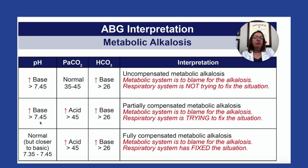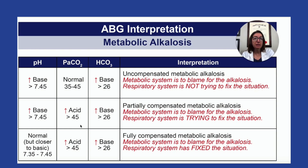On this next row, again, if pH is over 7.45, that means we have alkalosis. If we look at the PaCO2 and it's over 45, then that is acidic, so we know the respiratory system is not causing the alkalosis — it looks like it's trying to compensate. And if we go over here to bicarb, or HCO3, and it is over 26, then we know for sure we have metabolic alkalosis that the respiratory system is trying to compensate for. It's becoming acidic to try to compensate for this alkalosis. So in this case, we have partially compensated metabolic alkalosis — the respiratory system is trying to fix the situation, but hasn't fixed it completely because the pH is still out of range.